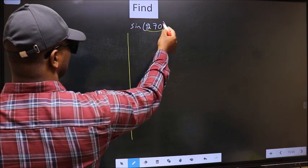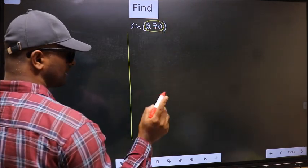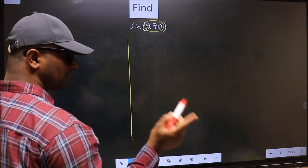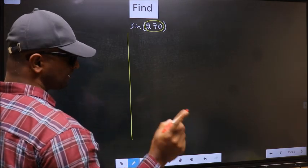Here we have 270. Now you should check. 270 lies between which two multiples of 180.